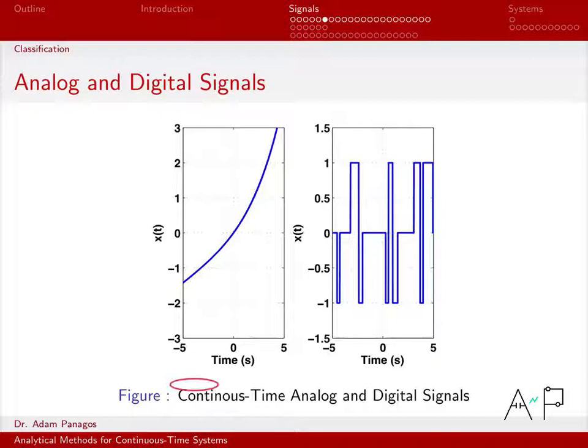We'll start off with continuous-time signals that are either analog, as I've drawn here on the left, or digital, as I've drawn here on the right. This signal on the left is an analog signal because as time is going on, the amplitude of this signal takes on all values from about minus 1.1 up to about 3.